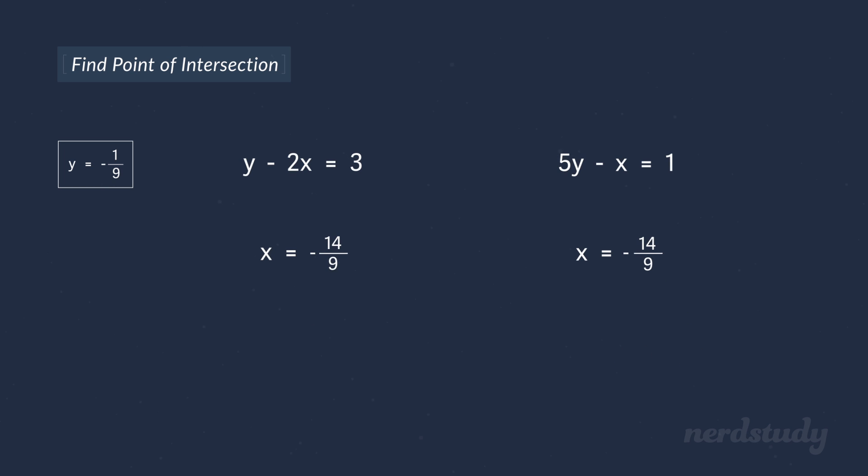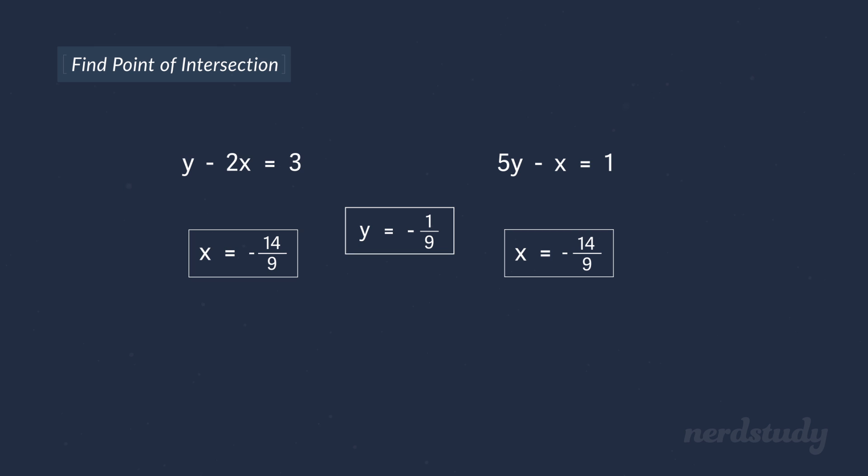Then let's divide both sides by negative 1 and we'd get x equals negative 14 over 9. And there it is. We've confirmed that our y value yields the same x values for both equations. So it looks like we found our point of intersection and it seems to be that negative 14 over 9 comma negative 1 over 9 is our solution.